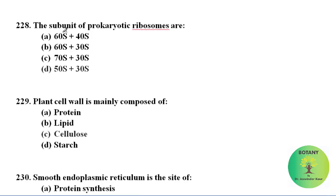The subunits of prokaryotic ribosomes are 50S and 30S, and both together make the 70S ribosome.